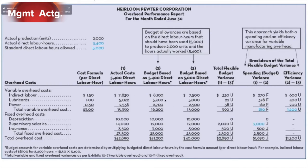In the next column, we have a budget based on 5,400 direct labor hours. Since we actually incurred 5,400, let's do a budget for 5,400 labor hours to see how far off we are from that level of activity. Remember flexible budgeting? We'll take the 5,400 and multiply it by each of these cost components. These are standard costs.